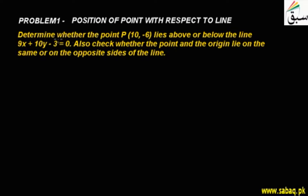The problem is the position of a point with respect to a line. Determine whether the point P(10, -6) lies above or below the line 9x + 10y - 3 = 0. Also check whether the point and the origin lie on the same side or on opposite sides of the line.